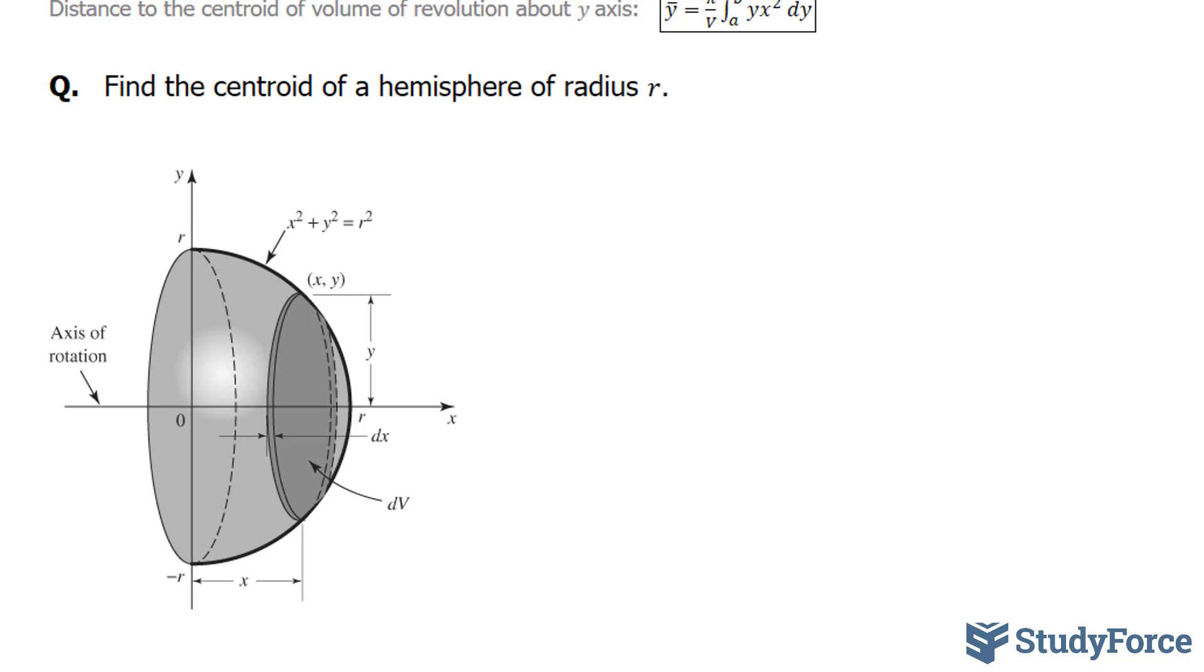First of all, a hemisphere is half a sphere. So let's come up with the volume formula of a sphere, and then divide it by 2. Because that will be important when we seek to find the coordinates of the centroid.